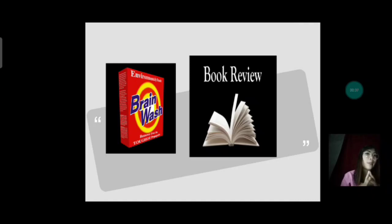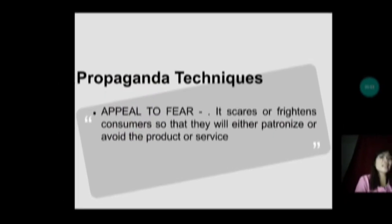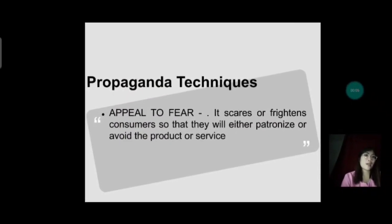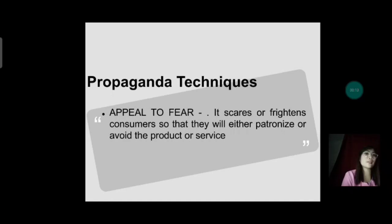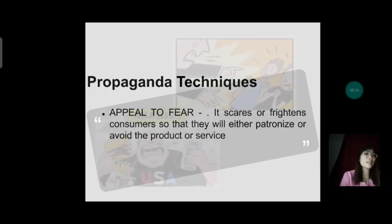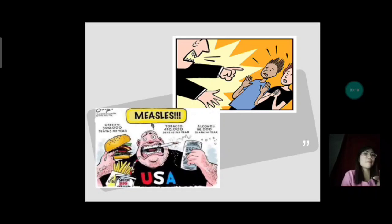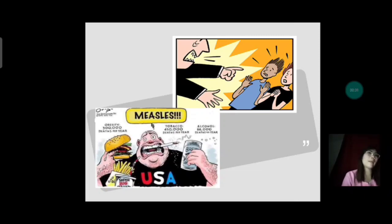Next is appeal to fear. It scares or frightens consumers so that they will either patronize or avoid the product or service. The best example is what's printed on a cigarette package — the statement 'Cigarette smoking is dangerous to your health. It may result in cancer and other respiratory illnesses.' That is an example of propaganda techniques that falls under appeal to fear.